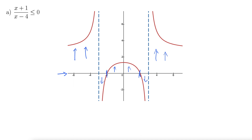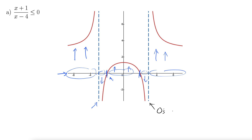The point of showing you this is that we must test regions defined by asymptotes and by zeros. This particular example would have five different regions to check. Asymptotes come from zeros in the denominator, and where the function actually crosses the x-axis — these will be from zeros in the numerator.